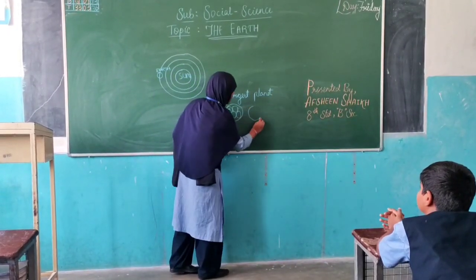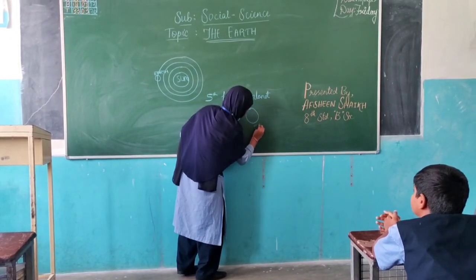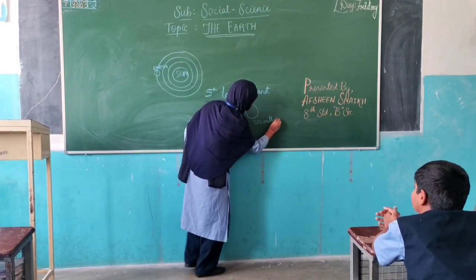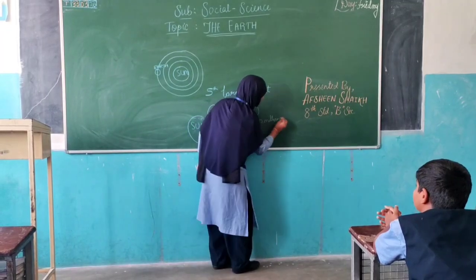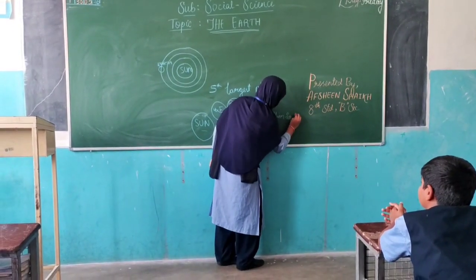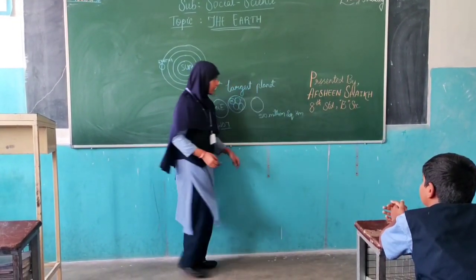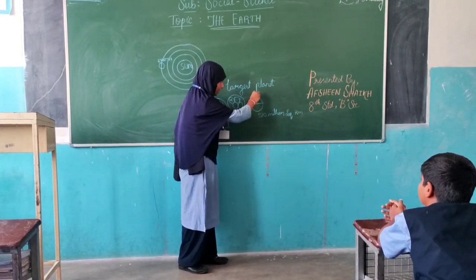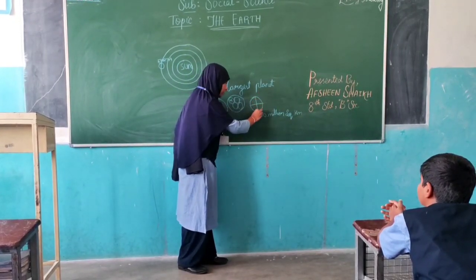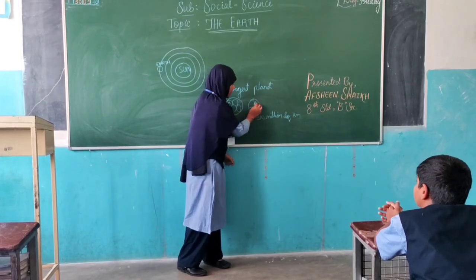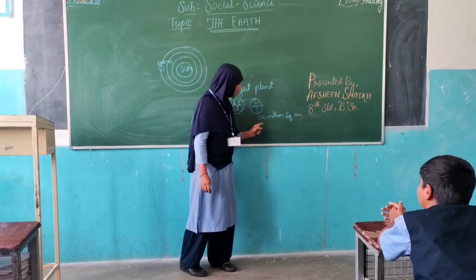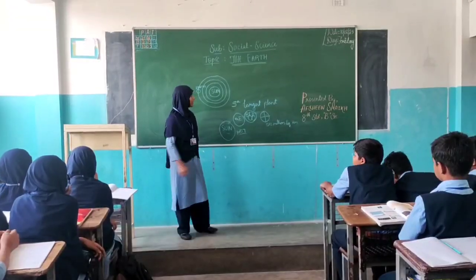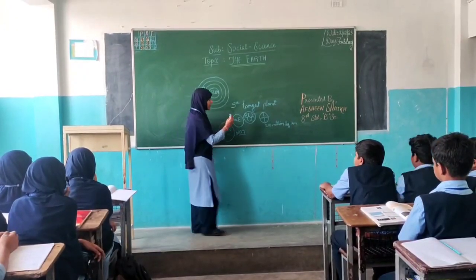The Earth is approximately 510 million square kilometers. It is fully surrounded — 510 million square kilometers. This measurement is not just from one direction but covers the full surface area of the Earth. Now let's come to the shape of the Earth.